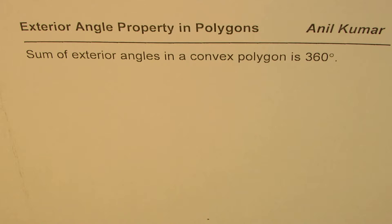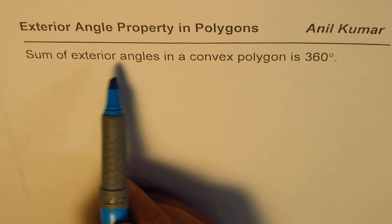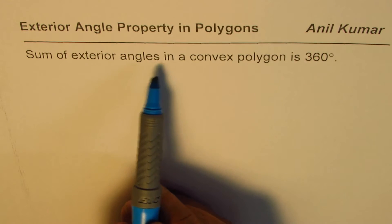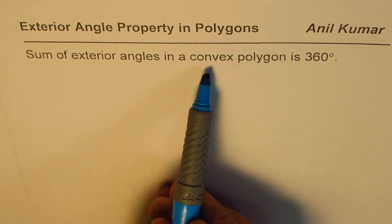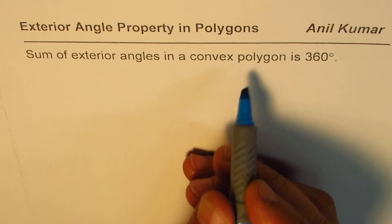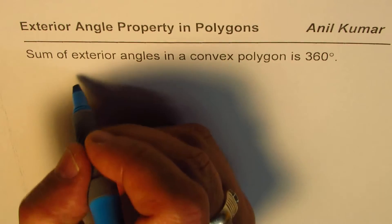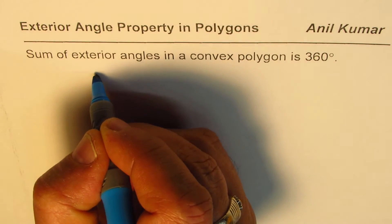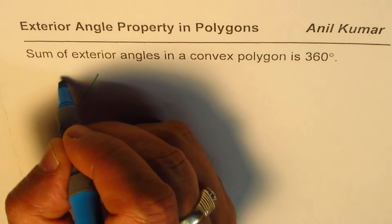I'm Anil Kumar. We're exploring the exterior angle property in polygons. A very important theorem is that the sum of exterior angles in a convex polygon is 360 degrees. Let's see why.